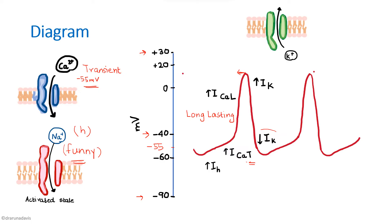This is how SA nodal cells have the ability to rhythmically discharge — because they have a very unstable resting membrane potential. In the diagram you draw, you must also mention the different ionic currents responsible for each phase.